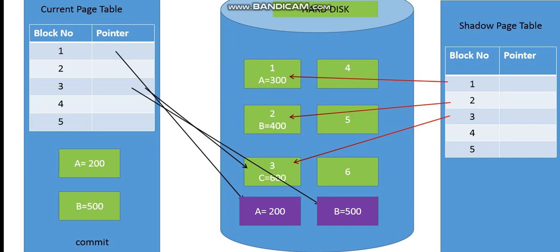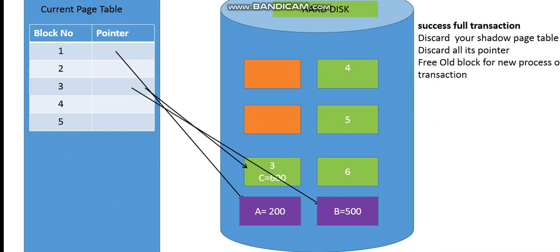When the transaction is successfully committed, the shadow page table is discarded along with all its pointers. The old blocks it referenced are made free for any new process or transaction. Only the current page table is kept, and it points to the new free available blocks with the updated data.